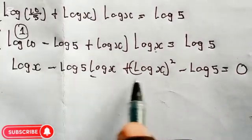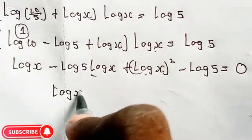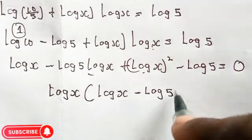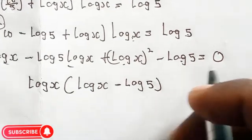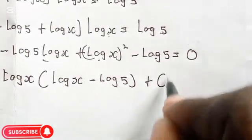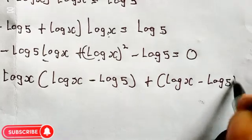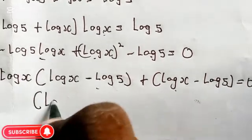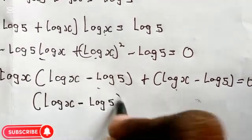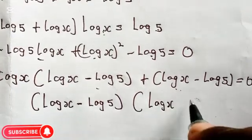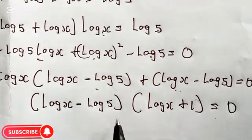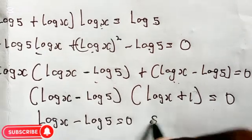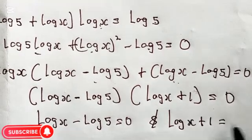Bringing terms to the left and collecting, we then factor out log x as common. We get log x times (log x minus log 5), plus (log x minus log 5) equals 0. Since log x minus log 5 is a common factor, factoring gives: (log x minus log 5)(log x plus 1) equals 0.